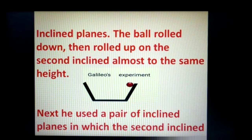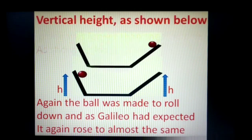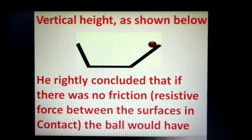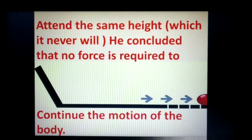The ball rolled down, then rolled up on the second inclined plane, almost to the same height. Next, he used a pair of inclined planes in which the second was longer than the first. Again, the ball rose to almost the same vertical height. He rightly concluded that if there is no friction — that is, no resistive force between the surfaces in contact — the ball would have rolled up to the same vertical height. He assumed that if there was no friction and the second plane was made horizontal and of infinite length, the ball would continue rolling forever in order to attain the same height, which it never will.